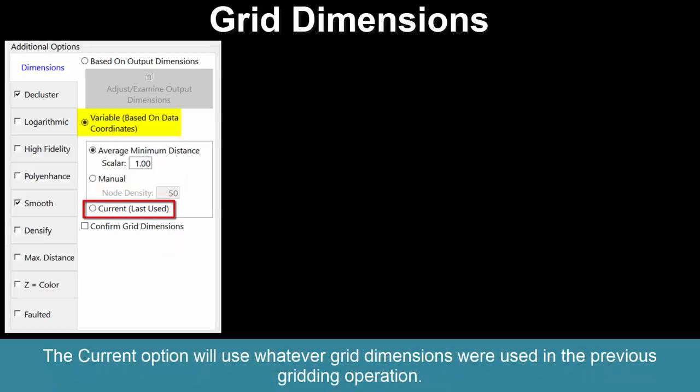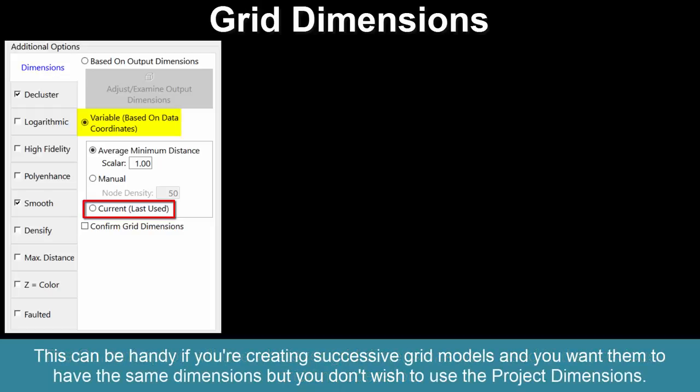The Current option will use whatever grid dimensions were used in the previous gridding operation. This can be handy if you're creating successive grid models and you want them to have the same dimensions, but you don't wish to use the project dimensions.